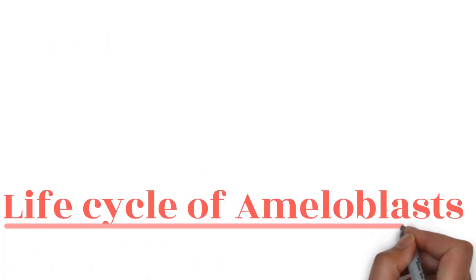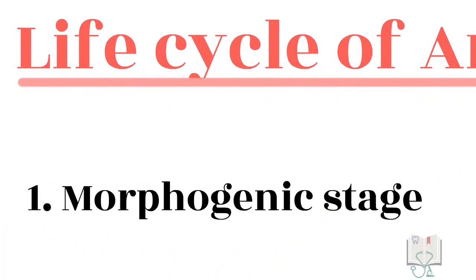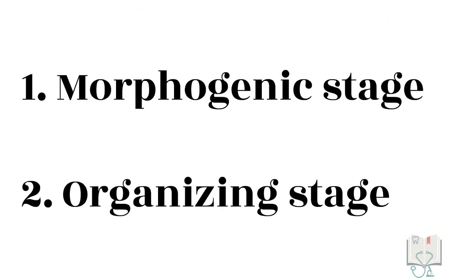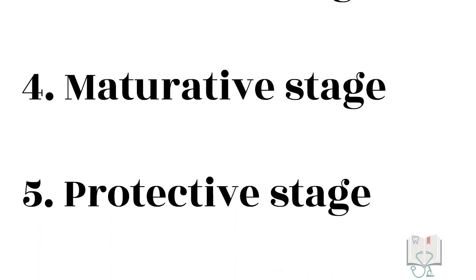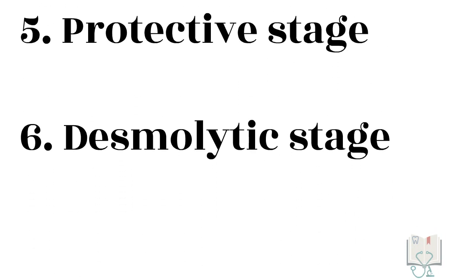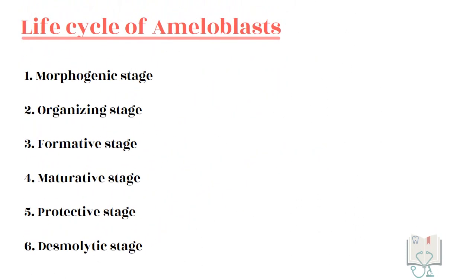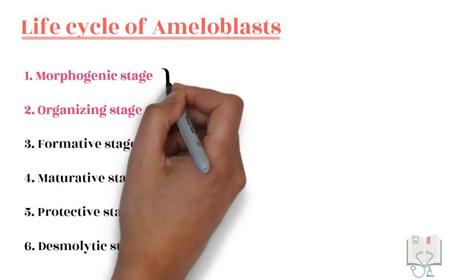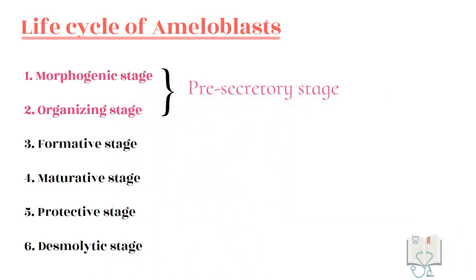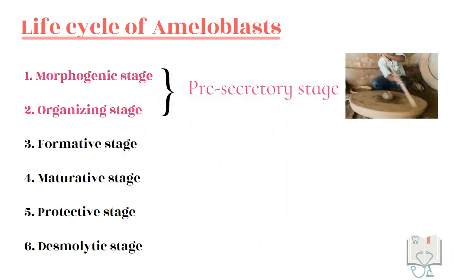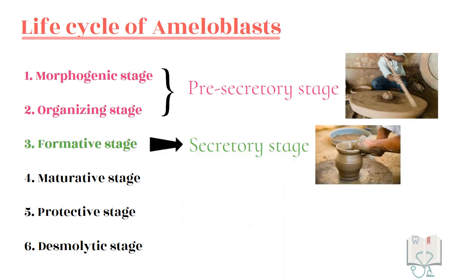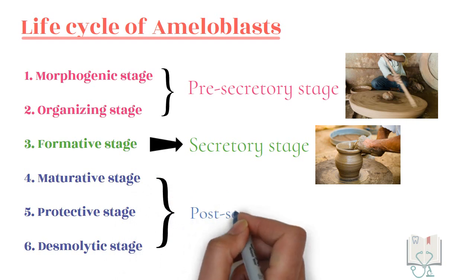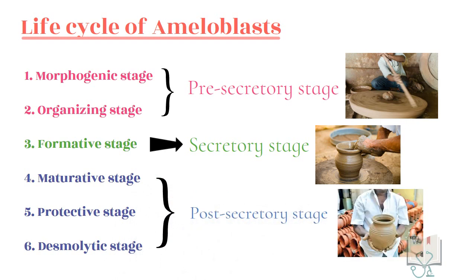The life cycle has six stages: morphogenic stage, organizing stage, formative stage, maturative stage, protective stage, and desmolytic stage. These stages are sometimes classified under three categories: pre-secretory stage, in which the cells prepare themselves for secreting enamel; secretory stage, in which the actual enamel formation occurs; and post-secretory stage, in which maturation and protection of enamel is done.